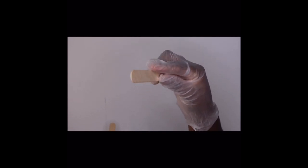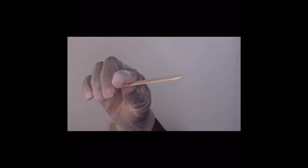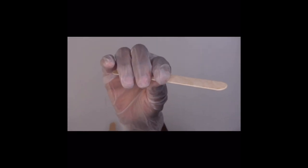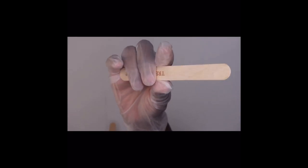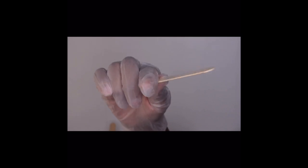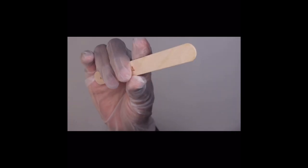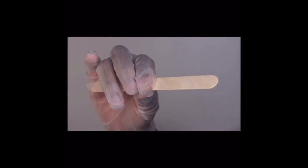The first step to waxing is knowing how to control your wax stick. You're going to find a comfortable way to hold it and then you're going to twirl your wax stick forward or backwards. Whichever way works better for you.